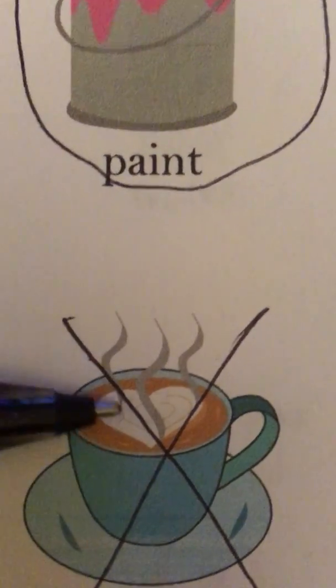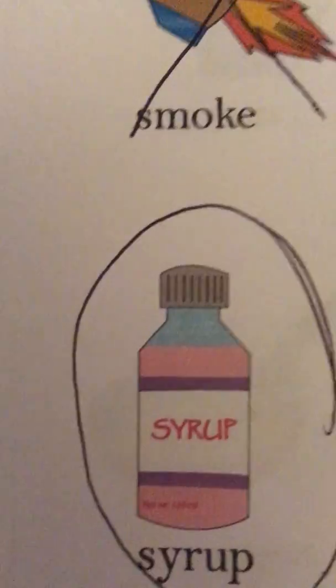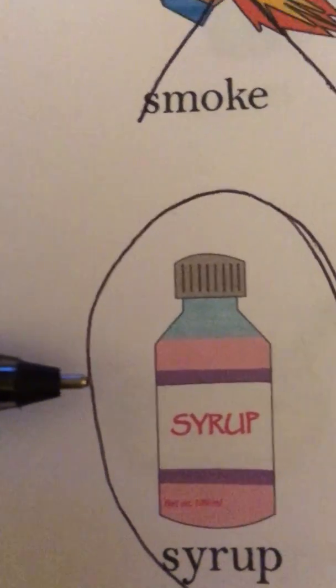And steam that comes off of coffee is not a liquid, so we put an X on it. And the last one is syrup, and syrup is a liquid, so we put a circle around it.